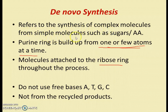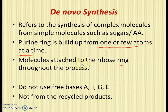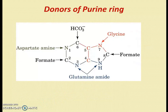In de novo synthesis, complex molecules are built from simple precursors such as sugars and amino acids. The purine ring is derived from amino acids, ribose sugar, and a few attached atoms. It is not synthesized from free bases — that occurs in the salvage pathway. In de novo synthesis, adenine and guanine are built from small molecules; digested nucleotides are degraded to uric acid as waste.